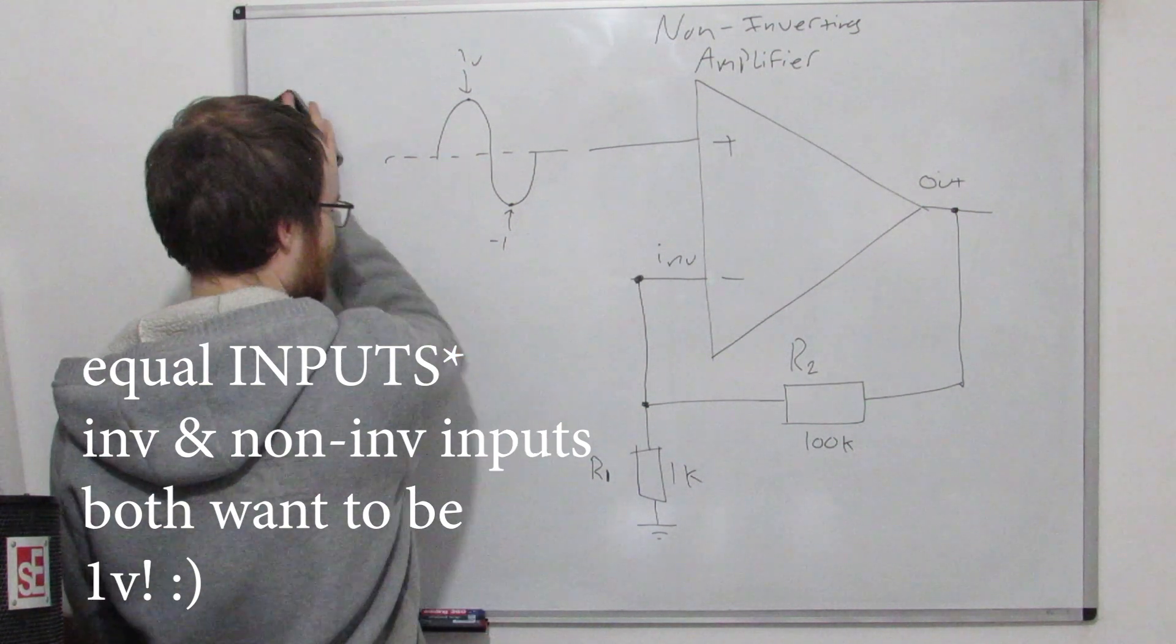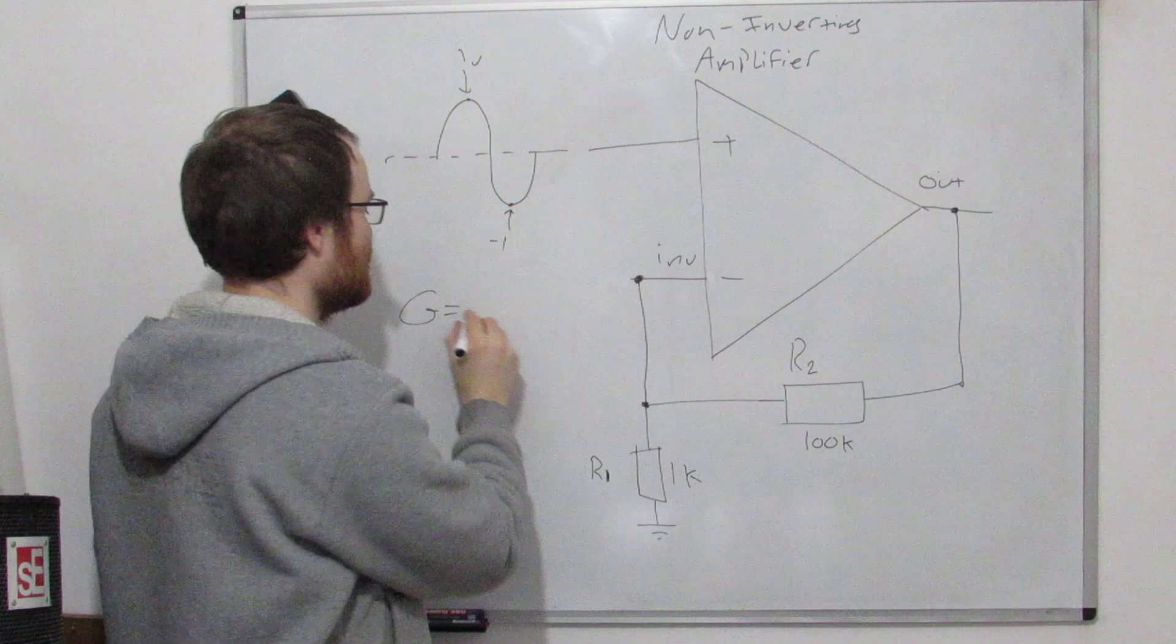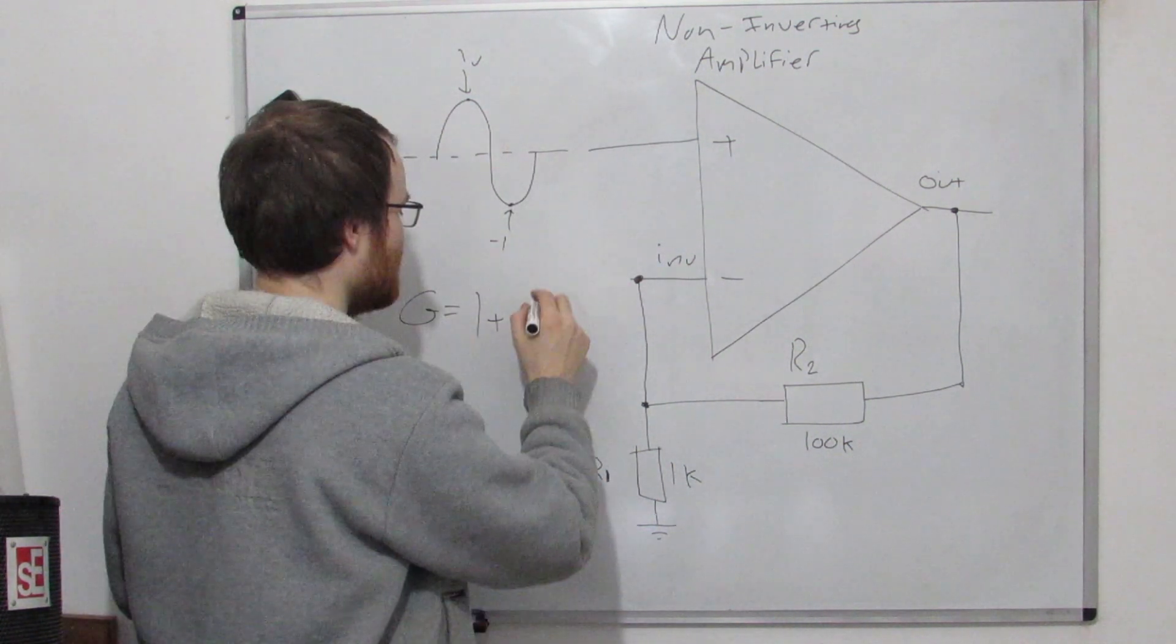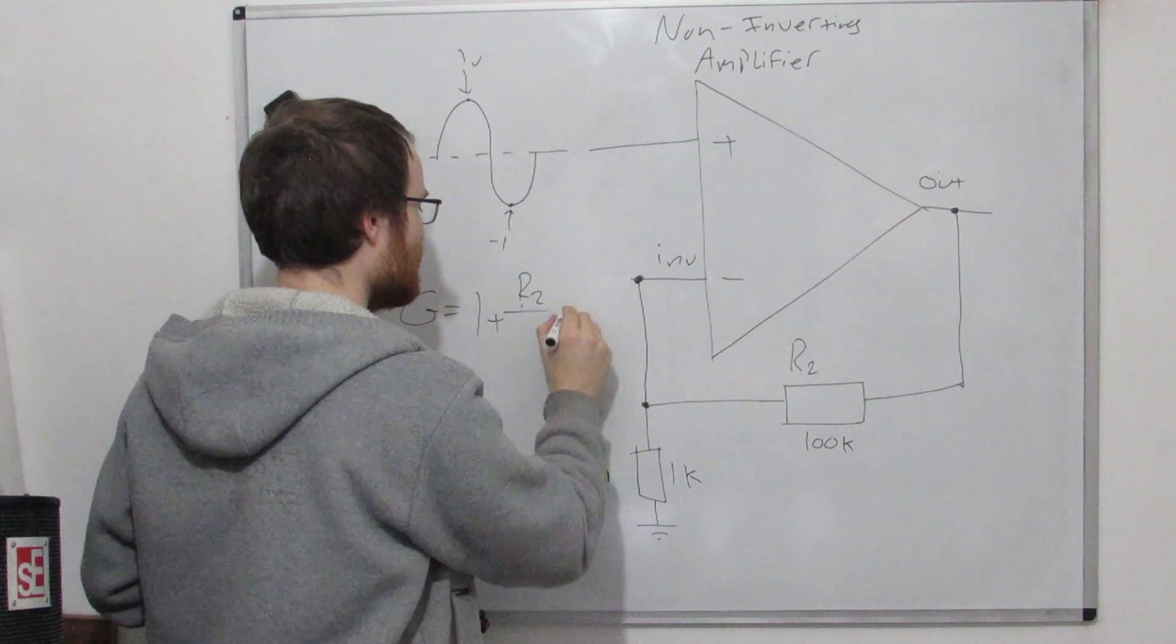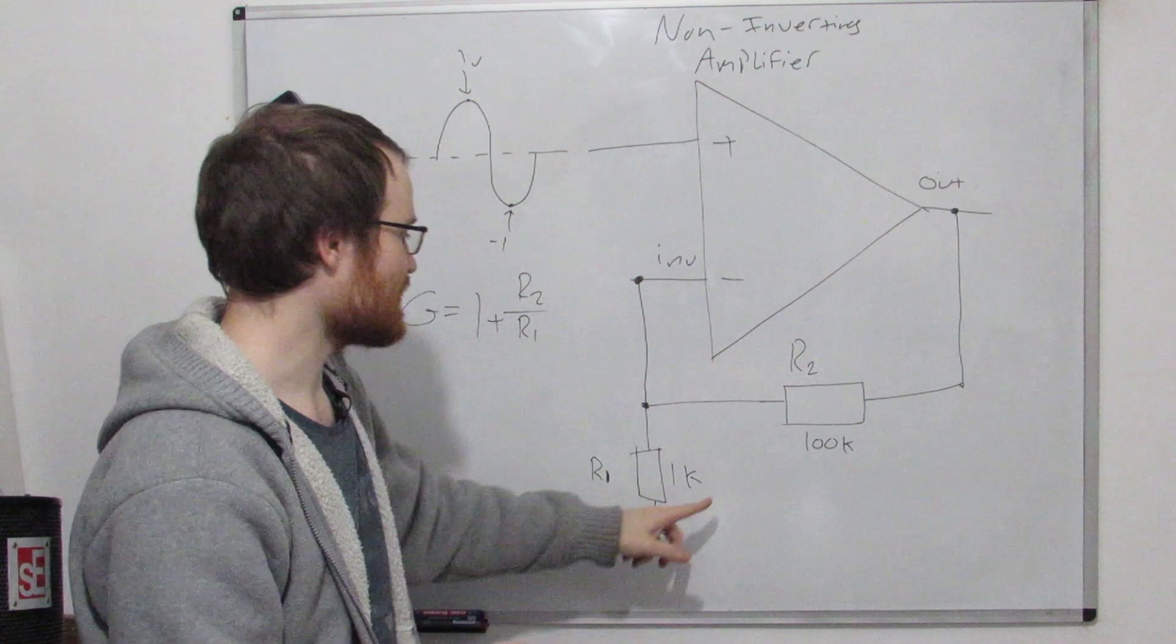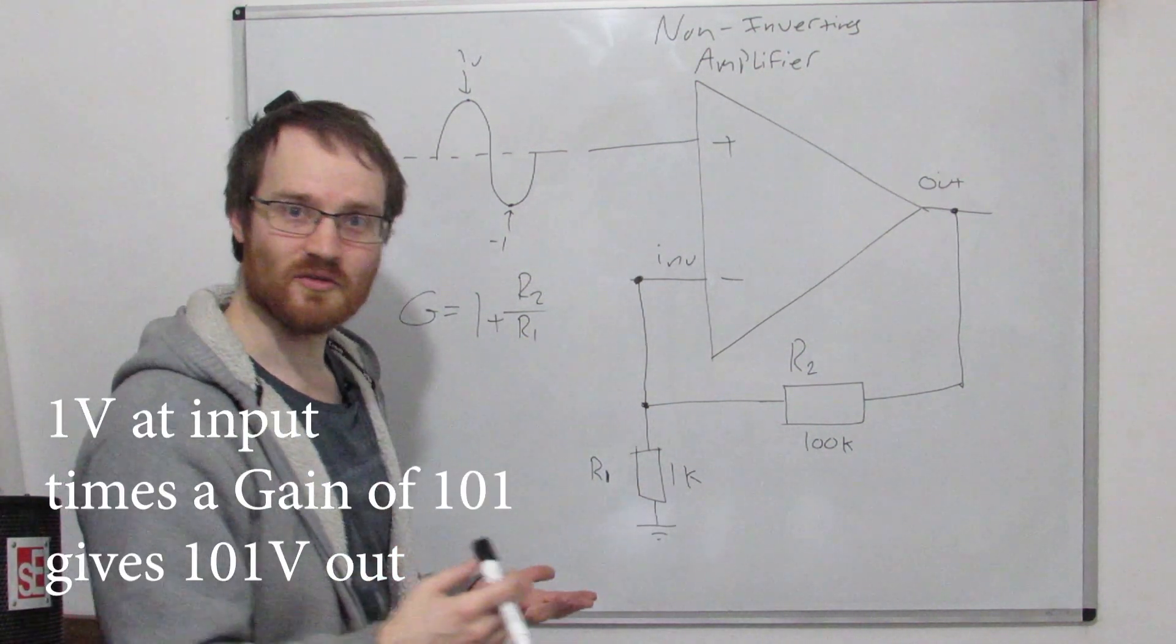How that's represented in terms of gain is we say that this circuit has a gain, or this configuration always has a gain of 1 plus R2 over R1. So if this was 100k, this was 1k, the k's cancel out, so you've essentially got 100 over 1, which is 100 plus 1, 101.